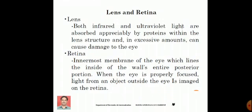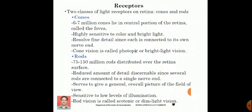After that, we have retina. Retina consists of a set of light receptors. We have two classes of light receptors called cones and rods. There are about 6 to 7 million cones, which are mainly used to form finer details of the image. They are highly sensitive to color and brightness.